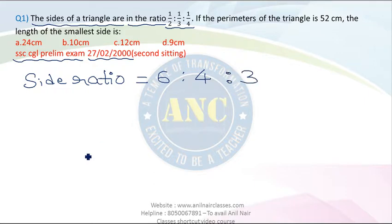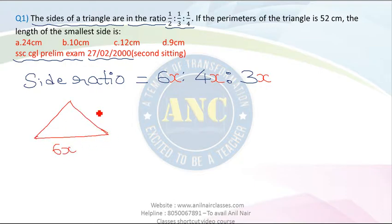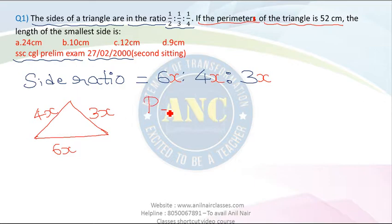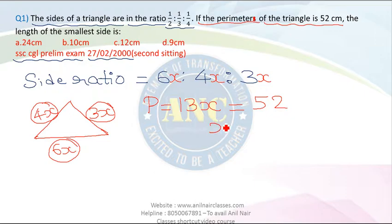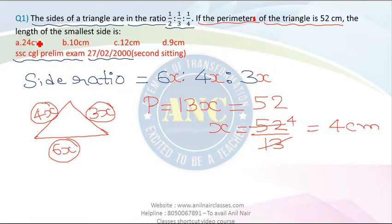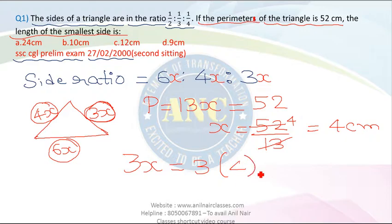The ratio is 6 : 4 : 3. In the textbook method, let the sides be 6x, 4x, and 3x. If the perimeter is 52 cm, then 3x plus 4x plus 6x is 13x equals 52, so x equals 4 cm. The smallest side is 3x equals 3 into 4 equals 12 centimeters, which is option C.